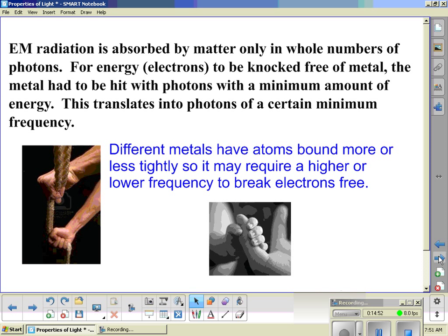So, electromagnetic radiation is absorbed by matter only in whole numbers of photons. In other words, we can't have half of a photon. For energy, electrons, to be knocked free of metal, the metal has to be hit with photons with a minimum amount of energy. This translates into photons of a certain minimum frequency. If you think back to E equals Planck's constant times frequency, that kind of makes sense. So, different metals have atoms bound more or less tightly, so it may require higher or lower frequencies to break electrons free, depending on the type of metal.